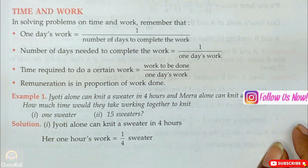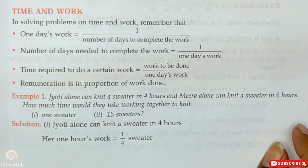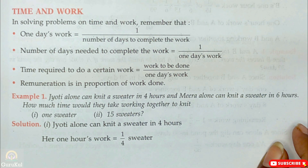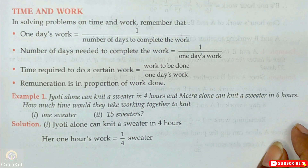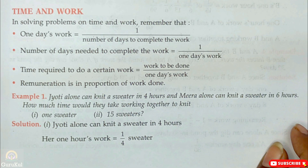The first thing is: if you have to find one day's work, that will be one divided by the number of days to complete the work. And the time required to complete that work will be one divided by one day's work — that gives you the time or days.